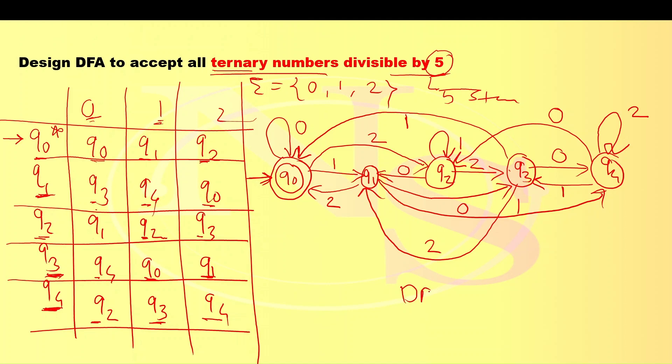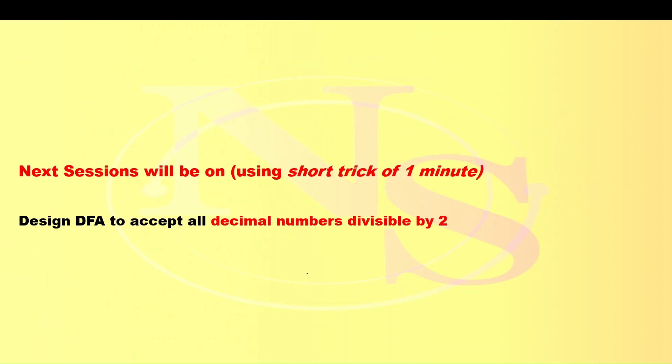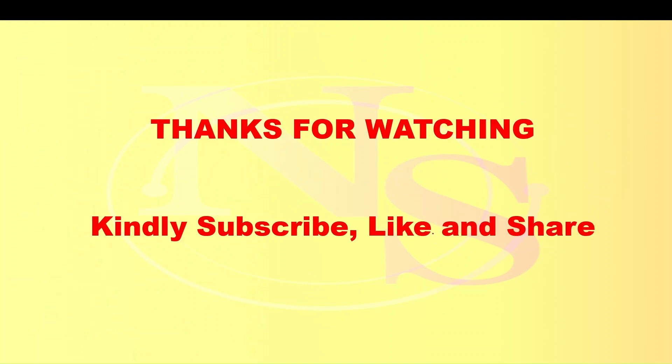And this is our final DFA. Now you may observe that if we start writing DFA first, it becomes very difficult. As we are following this trick and writing DFA from the table, then it becomes very easy. You may observe here different transitions crossing each other. That's okay, because here number of states are more and the input symbols are ternary. In the next session we will be learning how to design DFA to accept all decimal numbers divisible by 2 using the same trick. Thank you for watching.